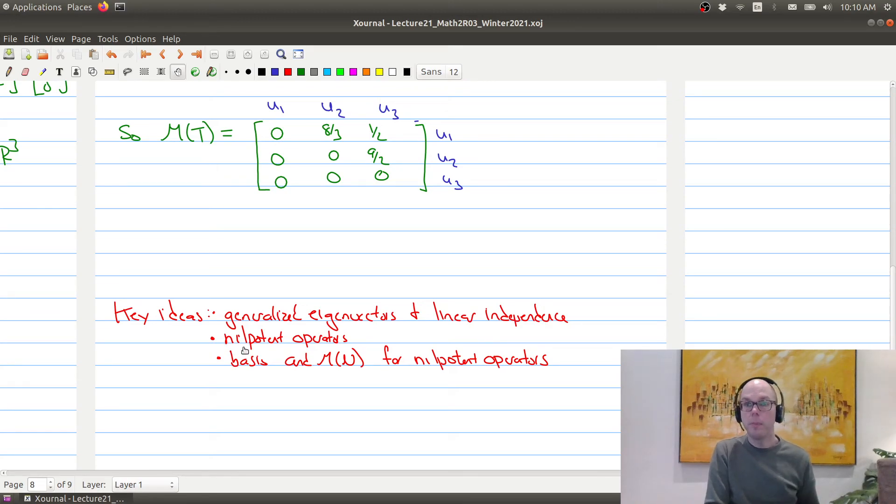We learned about nilpotent operators, and then we also figured out how to find a basis such that the matrix associated to a nilpotent operator is an upper triangular matrix with all zeros down the diagonal.